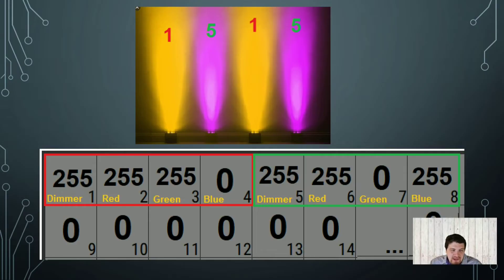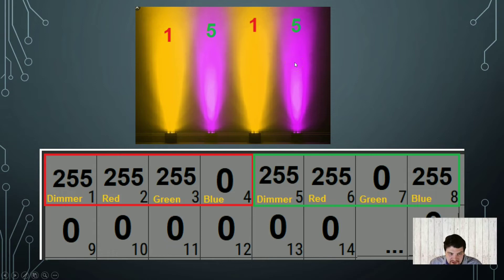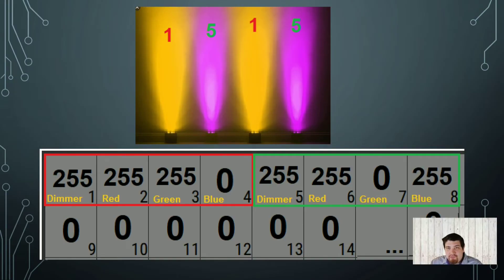You can control each individual fixture to do something different, or group them together to do the same thing. It doesn't matter what position the fixture is in the chain — they all receive every single one of the 512 values and choose which range to listen to. In this example, the first and third par lights have their address set to 1 and are yellow, with the dimmer up and red and green at max. The second and fourth fixtures have their address set to 5 and are purple — red and blue create purple in LED world. If you have more fixtures than will fit in 512 values, you can use multiple DMX universes, each with its own set of 512 values — but that's an advanced topic. For most people just getting started, one universe is all you need.